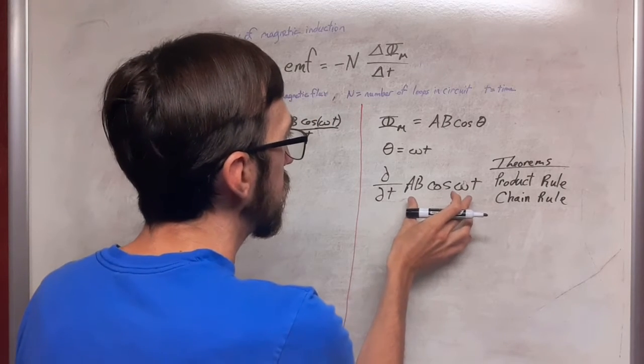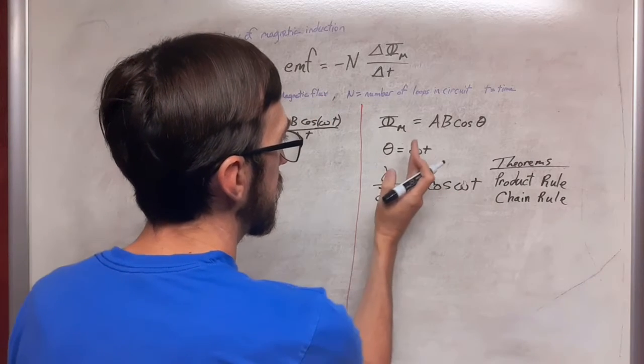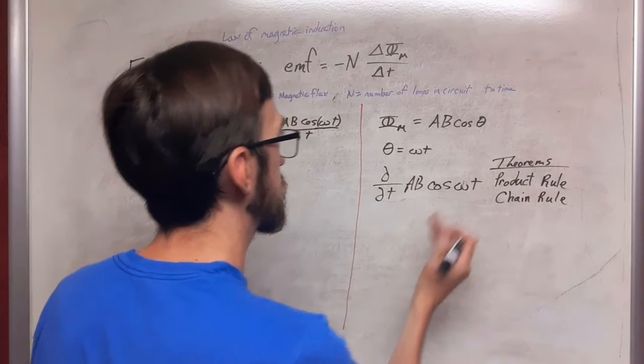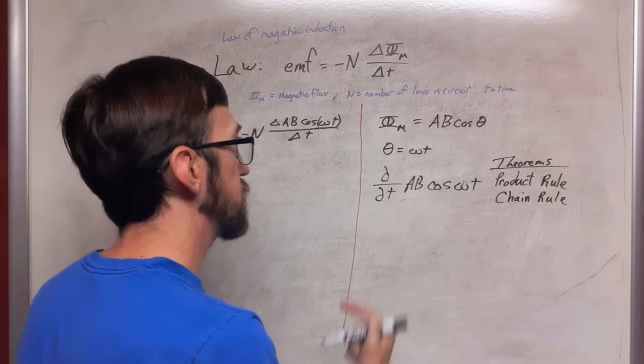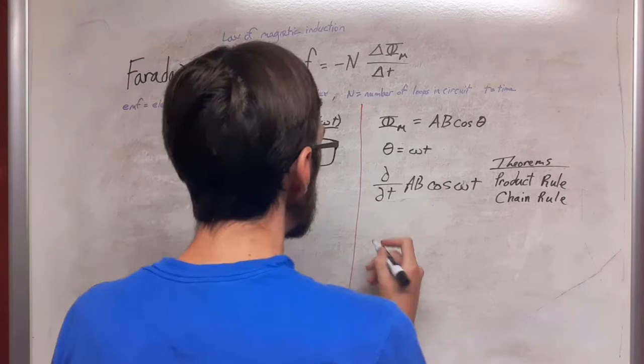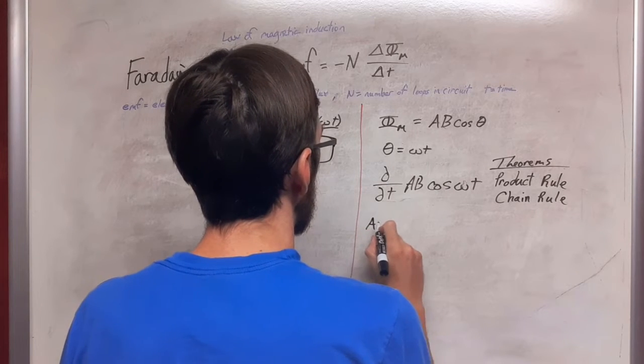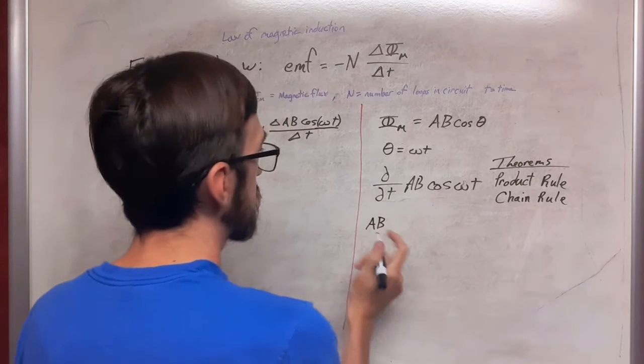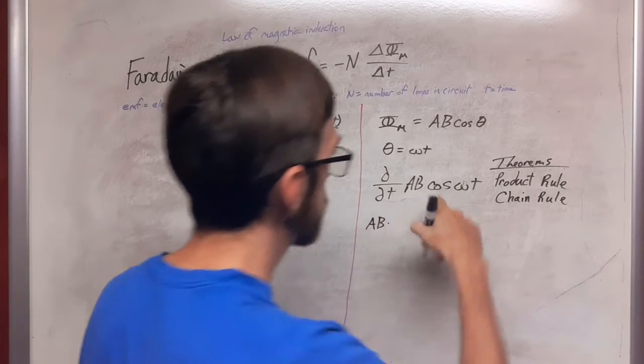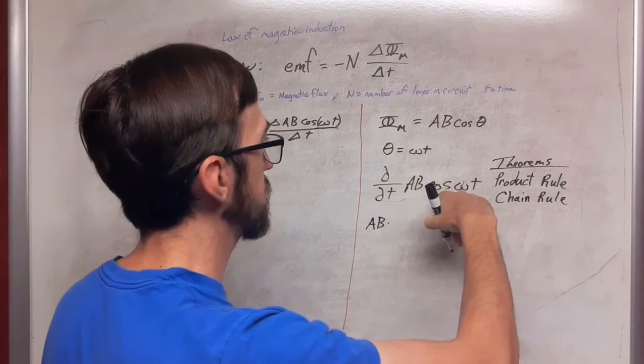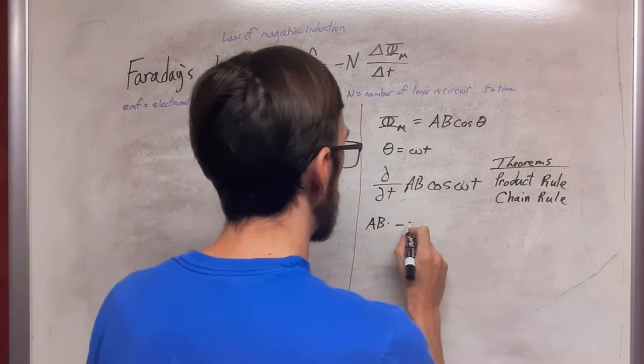So first of all, when we look at this, we have AB times cosine omega t. So we need to use the product rule here. So the first function times the derivative of the second function, derivative of cosine is negative sine.